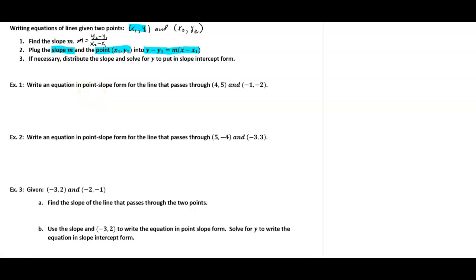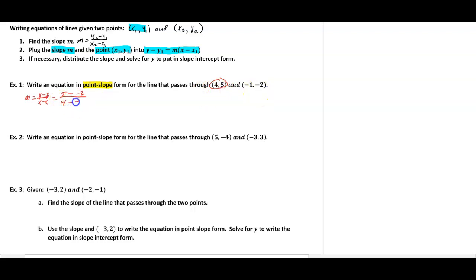Example one: write an equation in point-slope form for the line that passes through (4, 5) and (-1, -2). First thing we do is find the slope. I'll subtract the y-values and x-values keeping order consistent: 5 minus (-2) over 4 minus (-1). That gives us 5 plus 2 on top and 4 plus 1 on the bottom — seven over five. So the slope is 7/5.